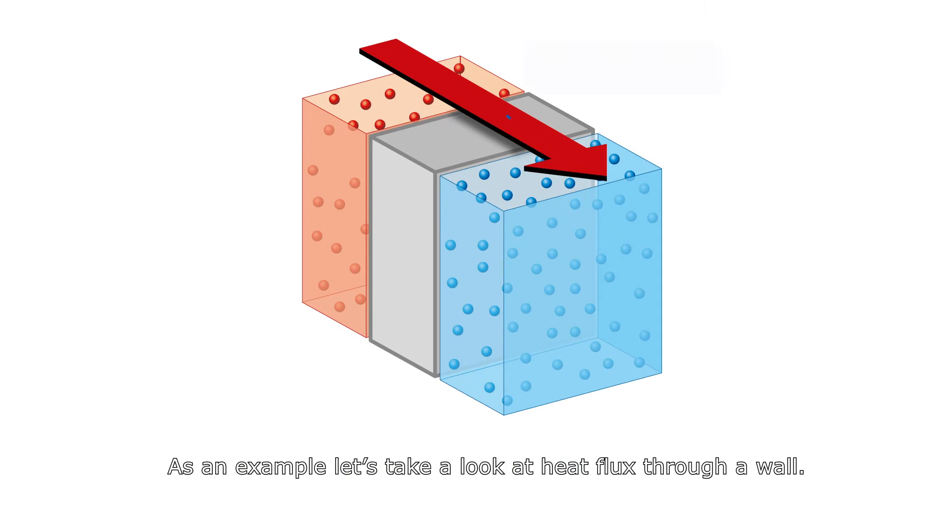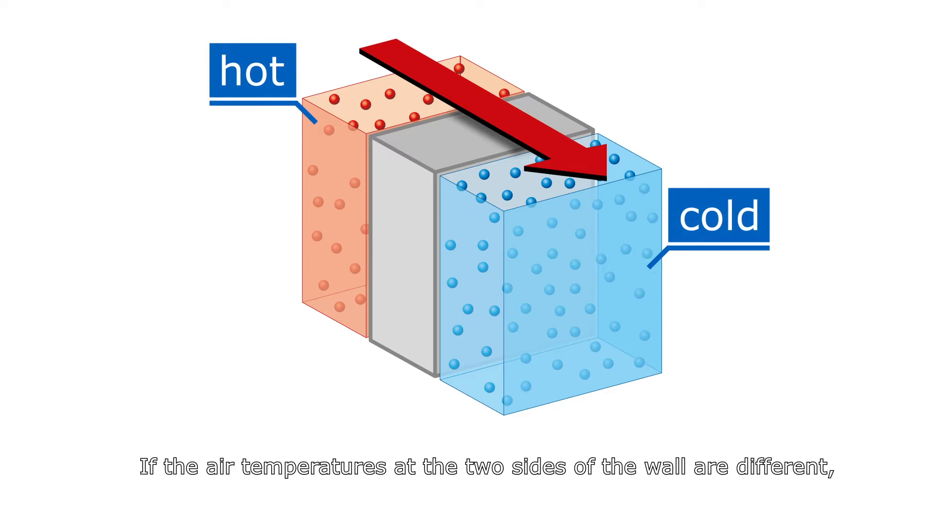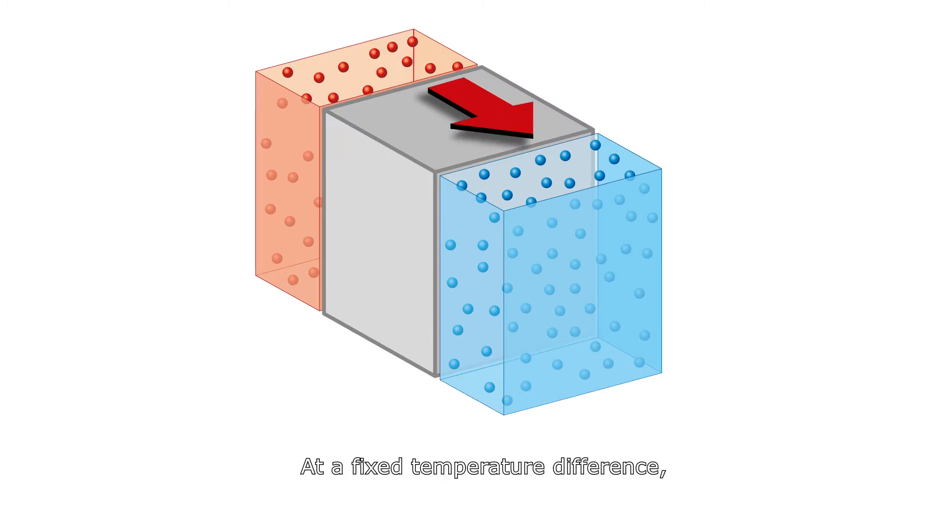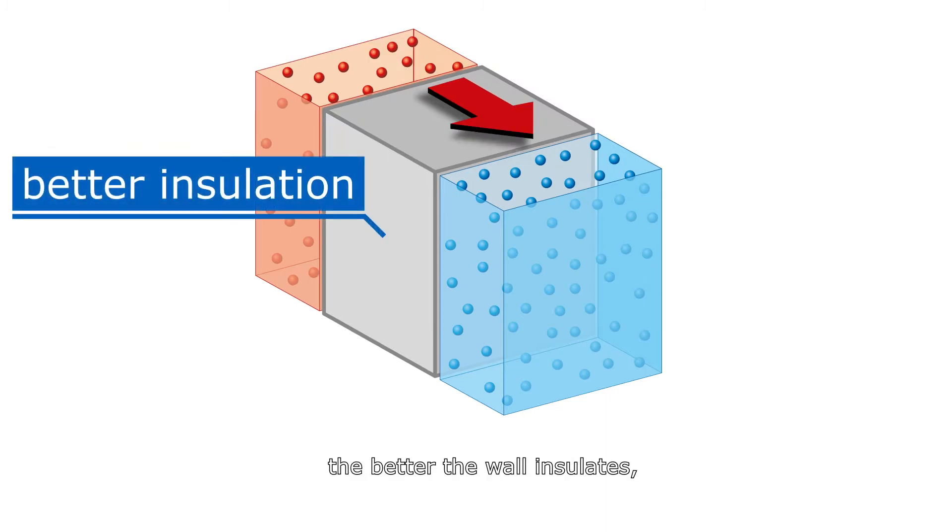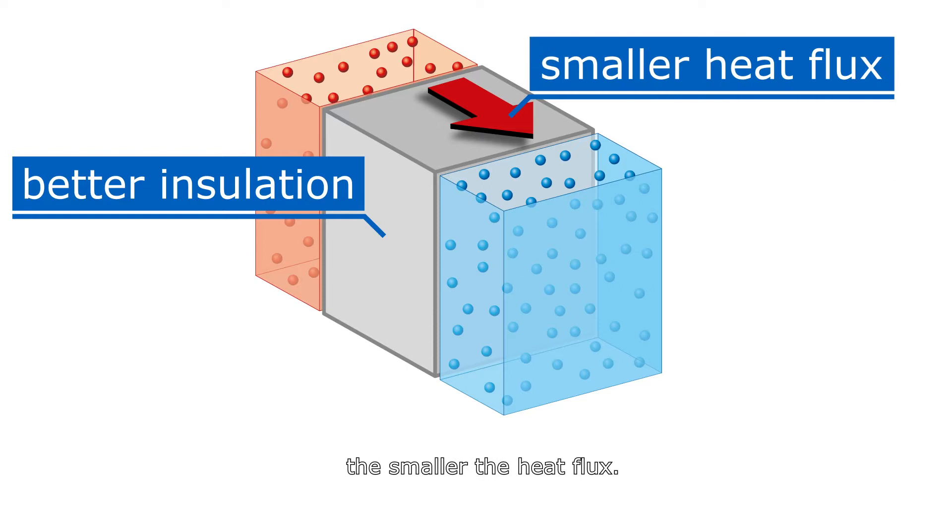As an example, let's take a look at heat flux through a wall. If the air temperatures at the two sides of the wall are different, heat starts flowing. At a fixed temperature difference, the better the wall insulates, the smaller the heat flux.